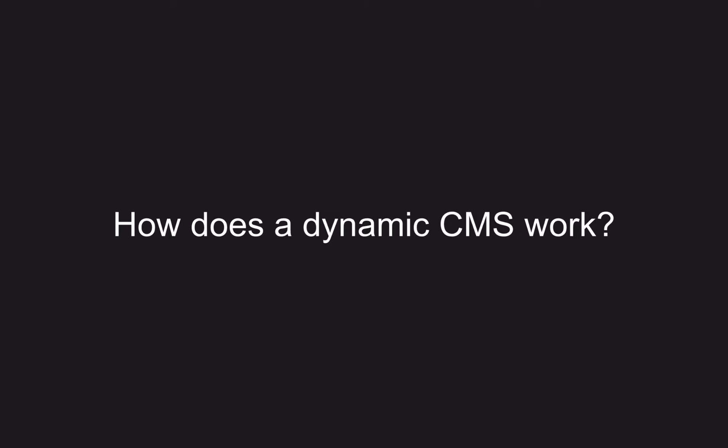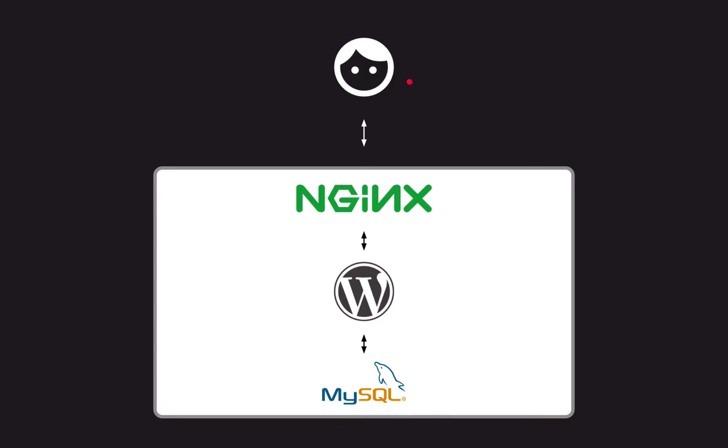To understand how static site generators are different, let's have a look at how a dynamic CMS works. We're using WordPress in these examples, but this could easily be swapped out for Drupal or the majority of content management systems out there. When a user goes to a page on a WordPress site, first the request hits the web server.